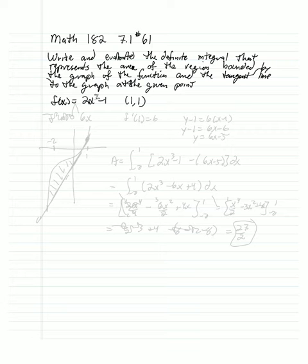So let's come up with that tangent equation. Our f prime of x would be, that's a cubed, it's going to be 6x squared. So that f prime at 1 is 6. So we have a slope of 6, and we have a point of (1, 1).